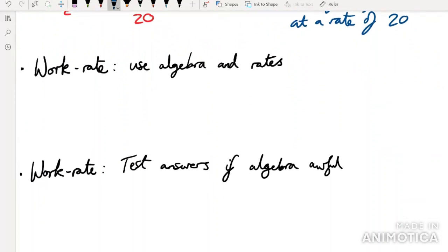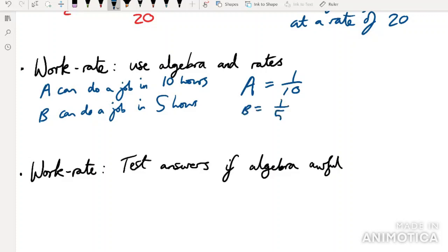Work rate problems. These are very popular in the GMAT. Just make sure you only try and set up algebra and then solve it. So for example, if I'm told we have machine A can do a job in 10 hours, so A can do a job in 10 hours. What you want to get very used to doing is saying that that means that the work rate of A is 1 over 10, every hour he can do a 10th of a job. B can do a job in 5 hours. So B equals 1 over 5, where B is the work rate of B.